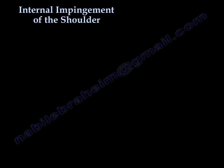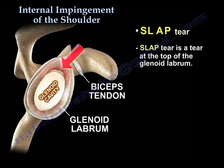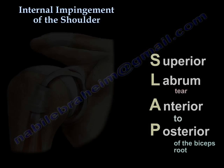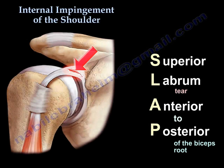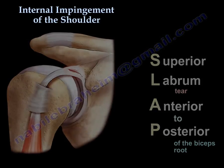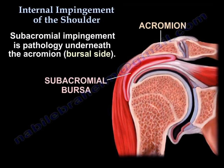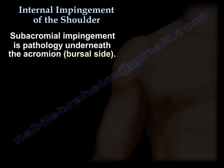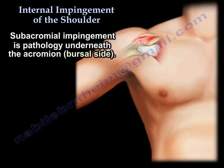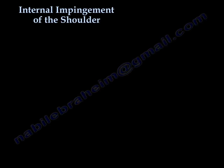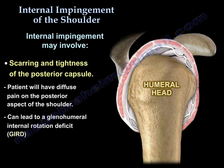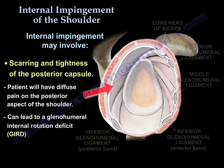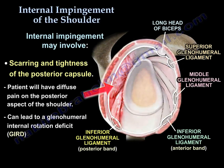A SLAP tear is a tear at the top of the glenoid labrum — it is a superior labrum tear anterior to posterior of the biceps root. Internal impingement is different from subacromial impingement, which is pathology underneath the acromion at the bursal side of the cuff.